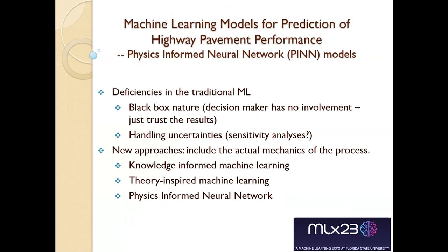Now, looking at traditional machine learning techniques — one of my concerns as a researcher is that I've done a lot of traditional methods: regression, Markov chain, semi-Markov, where I have control over the algorithms and methodology. But most ML models look like a black box — the semi-Markov has no involvement; you just have to trust the results. There's also the issue of uncertainties — other models allow sensitivity analysis to see which variables influence results. And there's an overlap: some people still consider logistic regression to be part of machine learning.